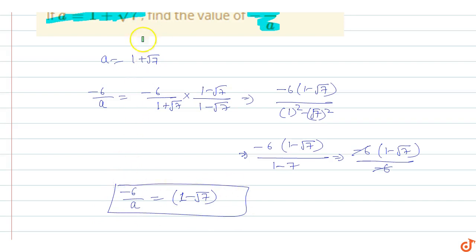So this is the answer for this question. When given that a equals 1 plus root 7, then minus 6 upon a equals 1 minus root 7.